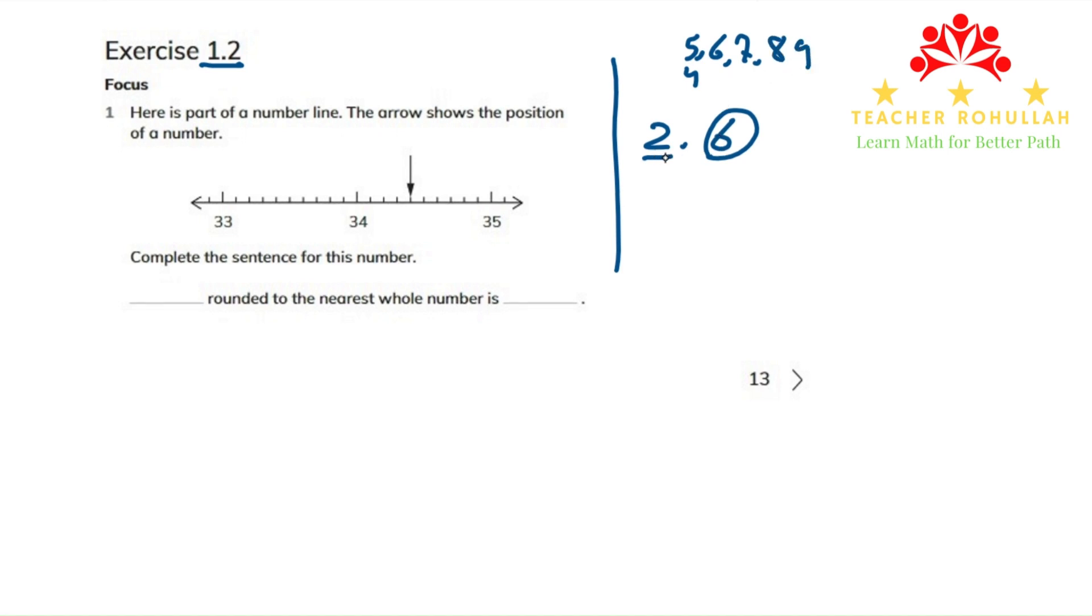We round up means we increase 2 by 1. And if it is 4 or less—4 or less means 4, 3, 2, and 1—then we round down. It means we keep the number the same.